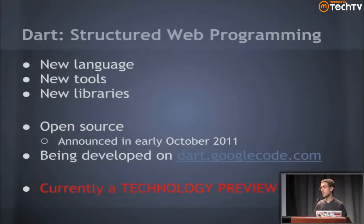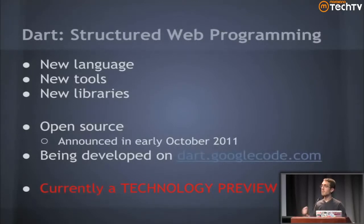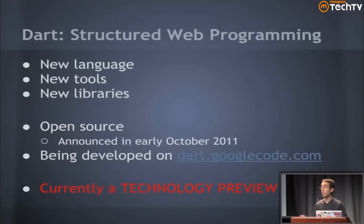Dart itself is open source. When we announced it in early October, it was a technology preview. Right out of the gate, we said we have some really good ideas and we're going to put them out there, but we're not done. We wanted to get out the direction we're heading with enough lead time that you and the community can help impact that direction of Dart, because it is open source and it is looking to be a major player on the open web platform.